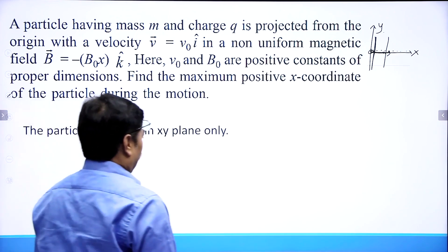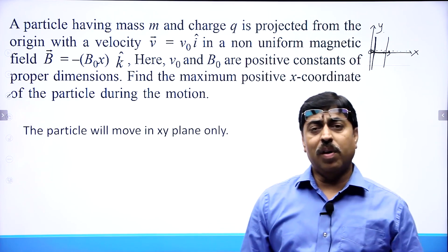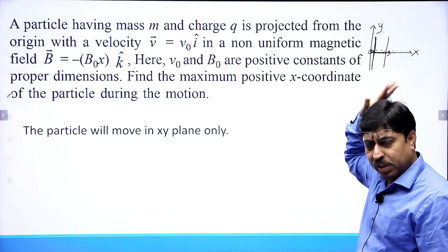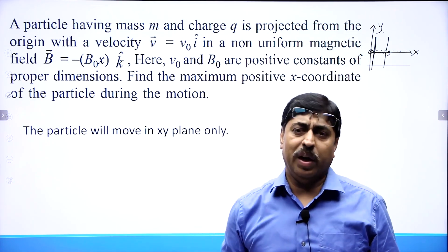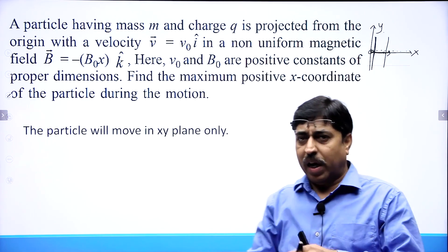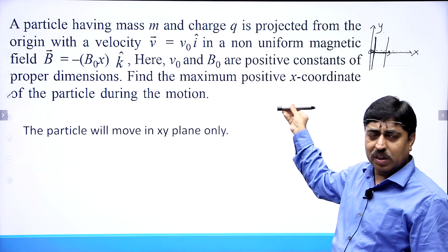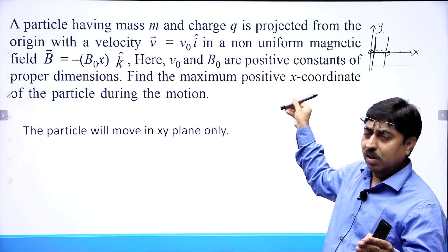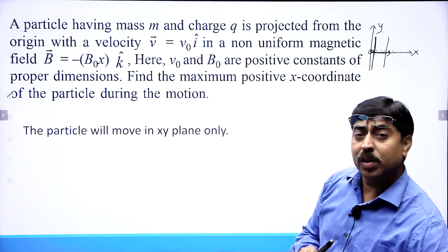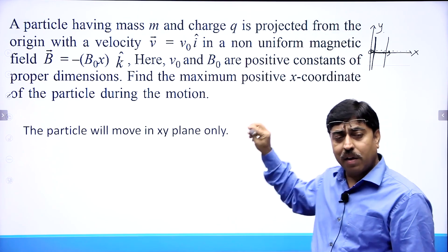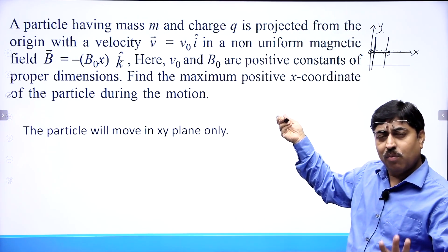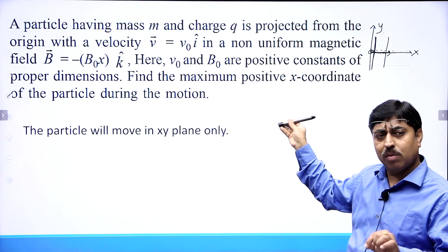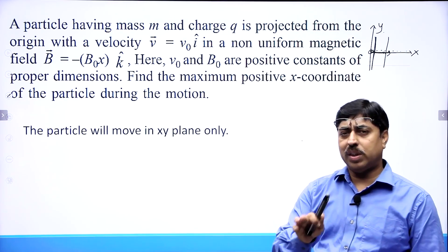Here goes my solution. The first thing we need to notice is that the particle will move in the x-y plane only, because the magnetic field is perpendicular to the plane of this diagram — it is in the z direction — and the velocity is given in the x-y plane only, along the x axis. The magnetic force is always perpendicular to the magnetic field, so the force acting on the particle remains in this plane only. Velocity and force are both in this plane, so obviously the particle is going to stay in the x-y plane.